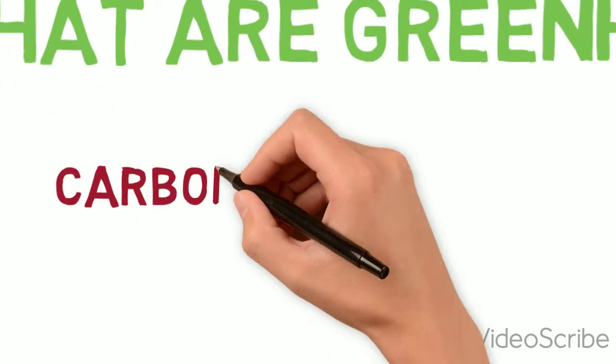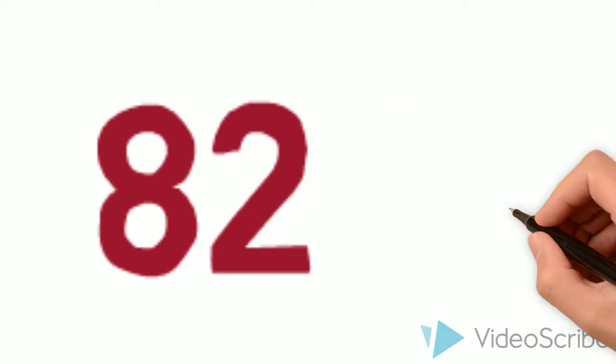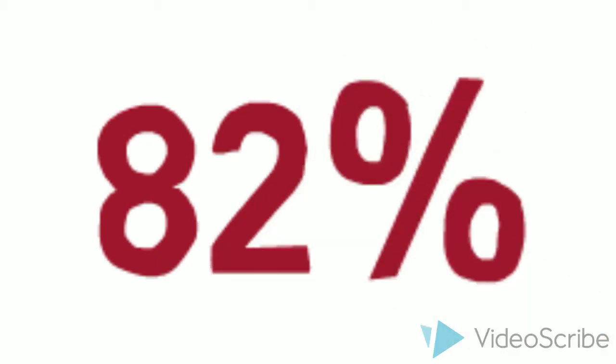The biggest one is carbon dioxide, but there are lots of others, like methane and nitrous oxide. Carbon dioxide made up 82% of all human-caused gases in 2012, and it stays in our atmosphere for thousands of years.